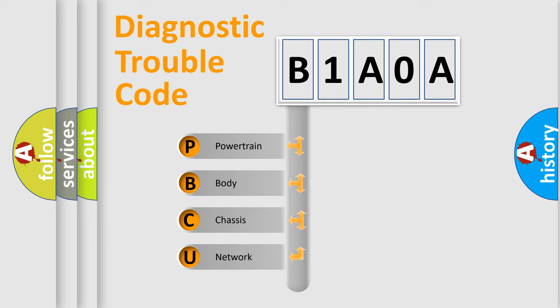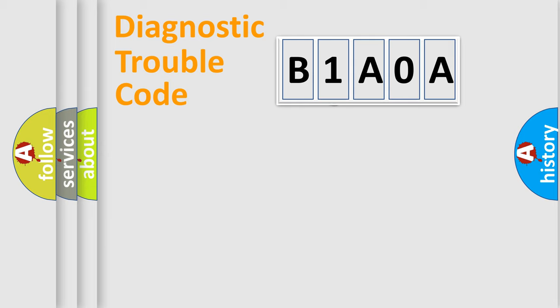We divide the electric system of automobiles into four basic units: Powertrain, Body, Chassis, and Network. This distribution is defined in the first character code.